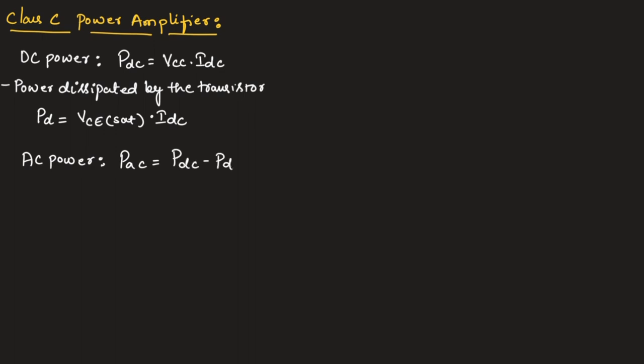We can write AC power as PAC = PDC - PD. If we substitute the values, we will get VCC × IDC - VCE(sat) × IDC. If we take IDC as common, we will get PAC = [VCC - VCE(sat)] × IDC.